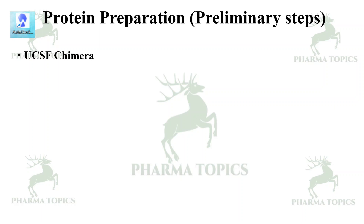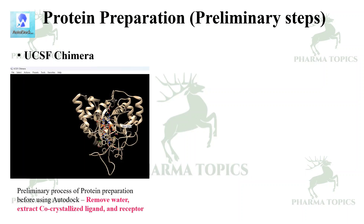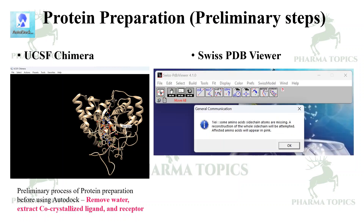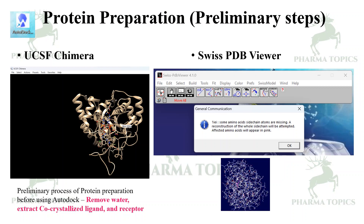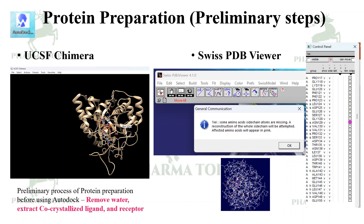Next is protein preparation. We will be using two tools. One is UCSF Chimera — preliminarily, you can process the protein before using AutoDock. You can remove water, extract the co-crystallized ligand and the receptor. You can do that in AutoDock also, but it will be very easy if you go for UCSF Chimera. If there are missing residues, you can add them here, but you need a license, which is free — you can apply and get it. Another tool to add missing residues is Swiss-PDB Viewer. When you load the protein, it will add the missing residues shown in pink color.